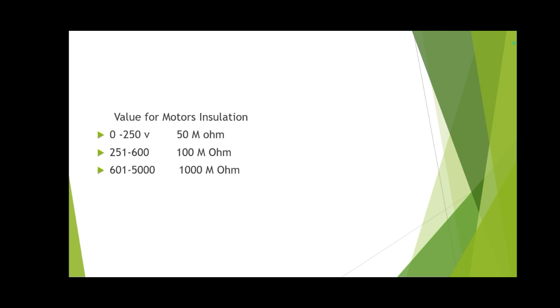For motor insulation resistance test values: for voltages 0 to 250 V the minimum is 50 megaohms; for 251 to 600 V it is 100 megaohms; and for 601 to 5000 V it should be 1000 megaohms.